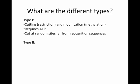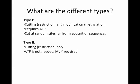Type 2 restriction enzymes only cut DNA. They do not methylate it. ATP is not needed for them to function, but magnesium is a cofactor and must be present in order for these enzymes to work. When used in the lab, we add buffer containing magnesium ions to the enzymes so that they will function. These are the class of restriction enzymes that are the most useful to us because they cut at specific sites on the DNA that are within the recognition sequences.